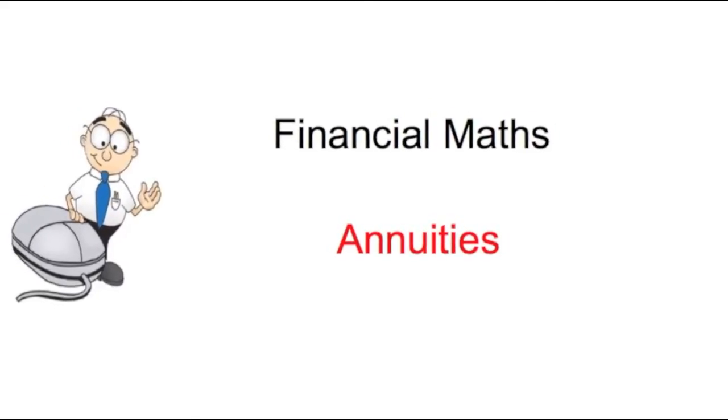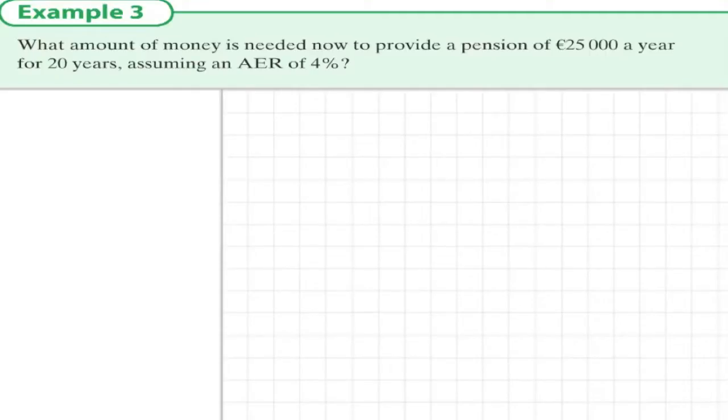This question relates to pensions. Example 3: What amount of money is needed to provide a pension of €25,000 a year for 20 years at an annual equivalent rate of 4%?